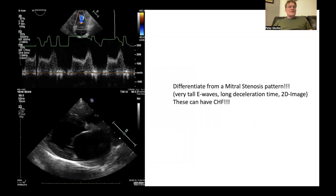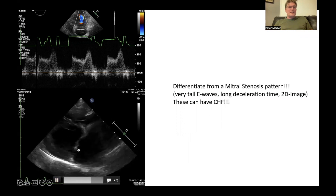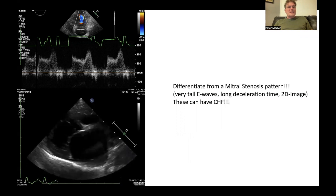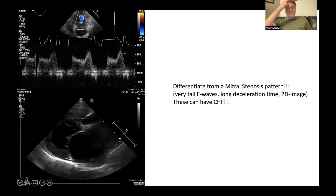A completely different pattern is mitral valve stenosis. Here the E and A waves are confluent and the amplitude of the E wave is extremely high — about 2 meters per second — even though the E wave may appear smaller than the A wave. You can visually confirm this by seeing that the mitral valve does not open properly. This is the typical pattern of mitral valve stenosis.